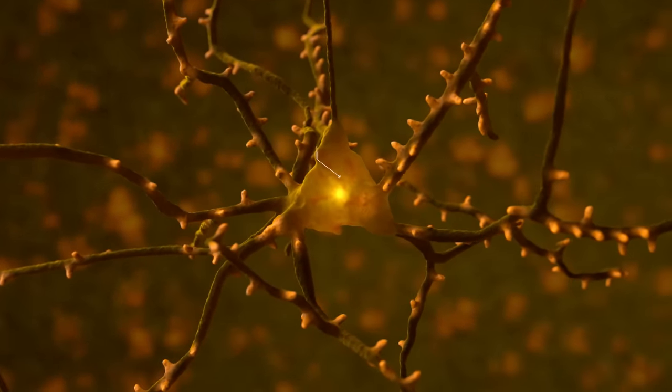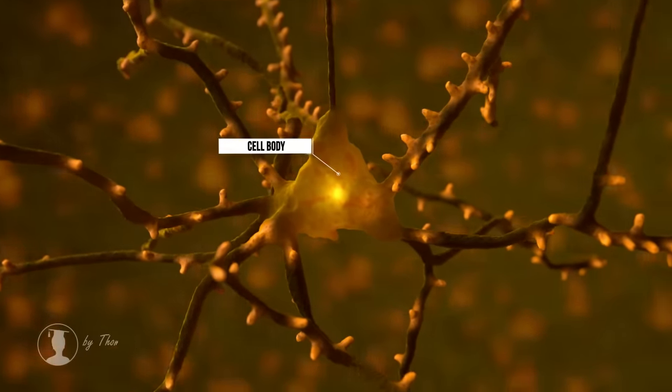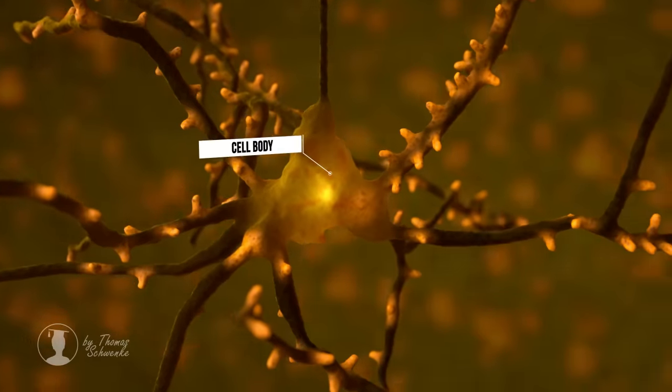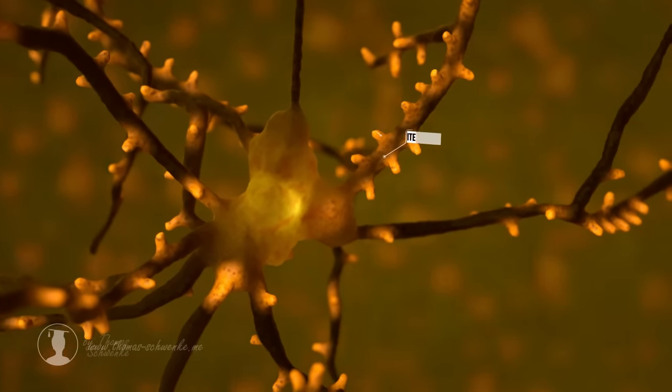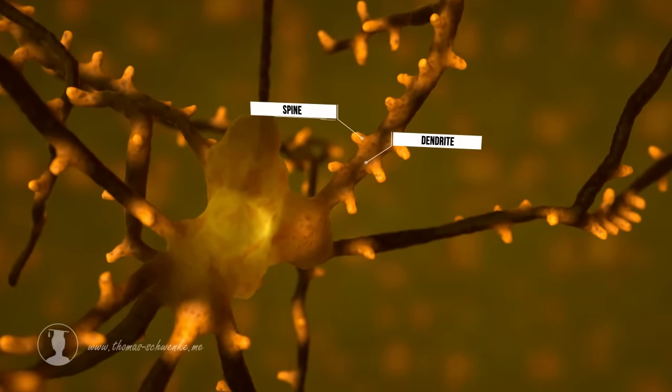In principle, all nerve cells have a similar structure. Nerve cells have a cell body in which there is a cell nucleus. Nerve cells often form dendrites, which possess spines.